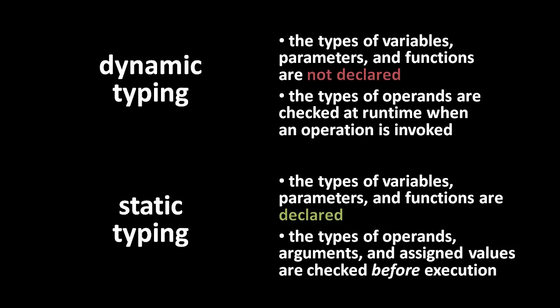A variable can only be assigned values of its declared type, a parameter can only be passed arguments of its declared type, a function can only return values of its declared return type, and a collection, such as a list, can only store values of its declared type.